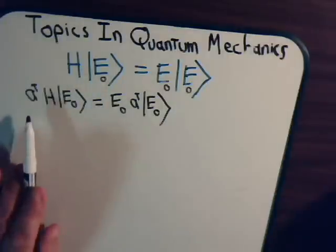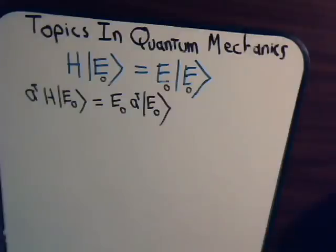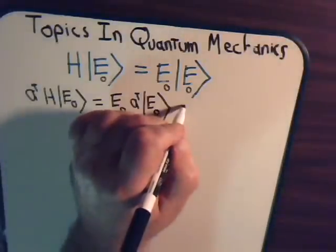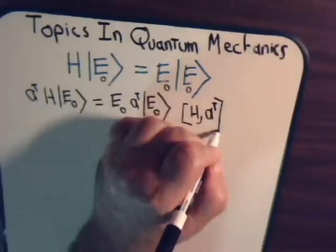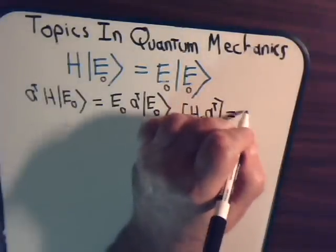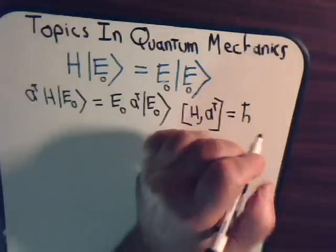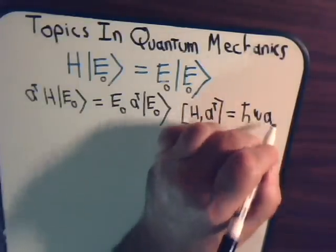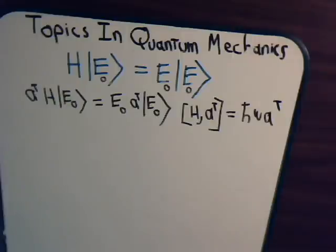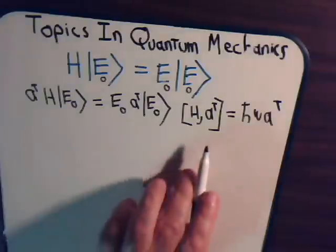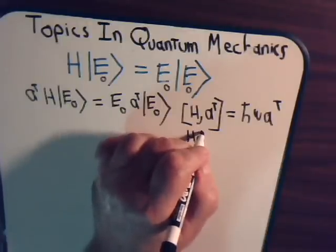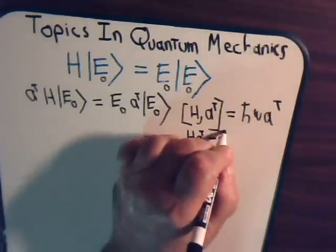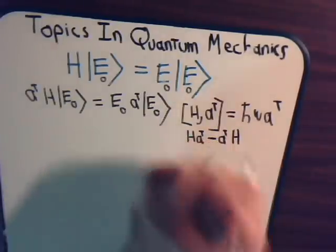Now notice we have A† times H. In video 24, we showed that this commutator [A†, H] equals +ℏω A†, where ℏ is just the constant h-bar. By definition, this commutator is H A† minus A† H.